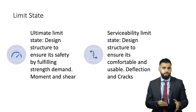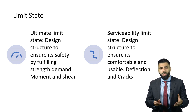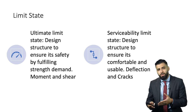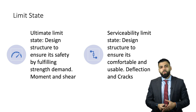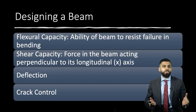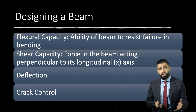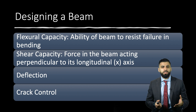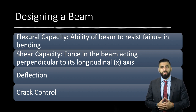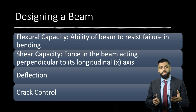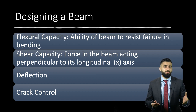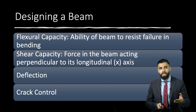When you talk about serviceability limit state, the designer is concerned with how the structure ensures its comfortable use, looking at deflection and cracks. To demonstrate how structural design works, we'll look at the design of a concrete beam. When designing a concrete beam, you consider the flexural capacity — the ability of the beam to resist failure in bending — and the shear capacity, which is the force acting perpendicular to the longitudinal axis. You also consider deflection and crack control, all specified in AS3600.